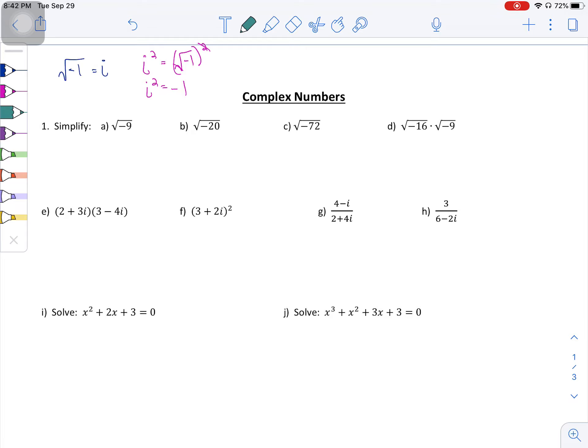If we talk about i to the third power, i to the third power could be written as i times i squared. Well, i is the square root of negative one or just i, and i squared is negative one. So it's kind of weird, but i to the third power is equal to negative i.